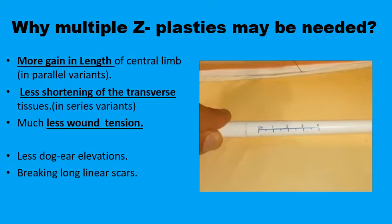But why may multiple z-plasties be needed in some situations in preference to the classic z-plasty with only the transposition of two triangular flaps? The answer is there may be situations in which more gain in the length of the central limb is required — more than what a classic z-plasty would offer, or less shortening in the transverse direction where you have less redundant tissues to redistribute.